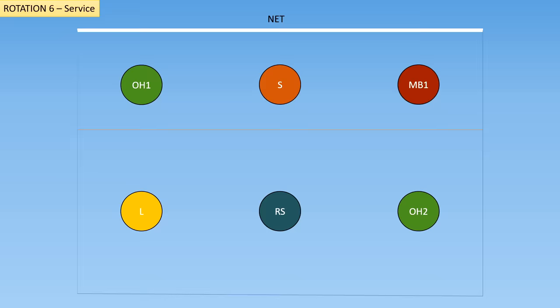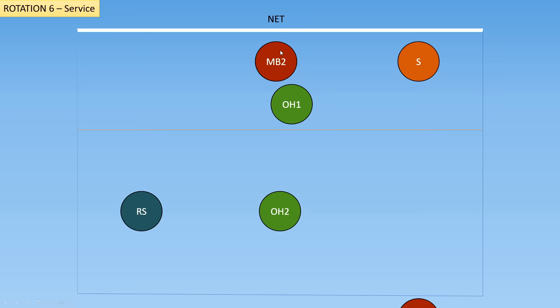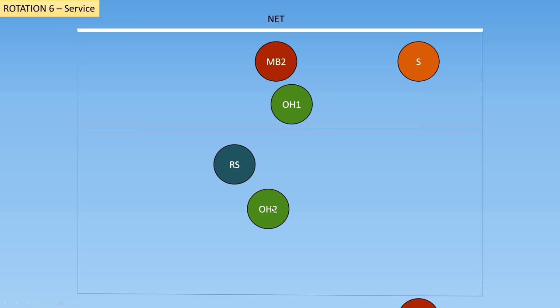Rotation 6, service. We are going to rotate one more time. The libero is front row again, so they sub out for the middle blocker. The libero can only serve for one of these middle blockers, so this time the middle blocker is just going to serve themselves. The middle blocker gets to the middle, the outside hitter gets to the front left as soon as the ball is contacted, and these players also switch. The ball is served and everybody gets into their base positions.